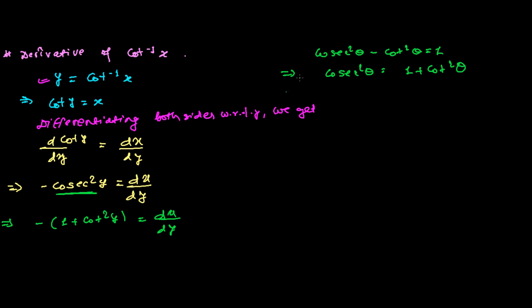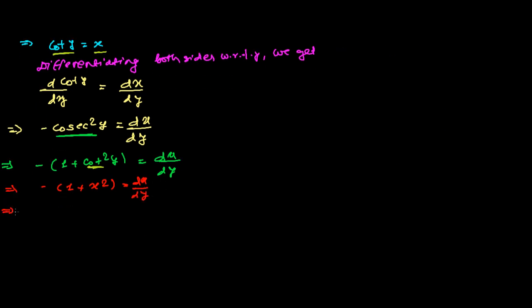Now, cot(y) = x, so in place of cot²(y) I can write x², giving minus(1 + x²) = dx/dy. We need dy/dx, so we take the reciprocal: dy/dx = −1/(1 + x²). That is the derivative of cot inverse x.